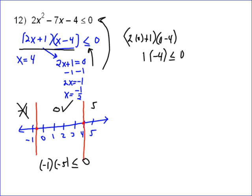And then you try 5. 2 times 5, plus 1 is 11. 5 minus 4 is 1. So, 11 is not less than or equal to 0, so 5 doesn't work.